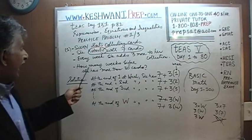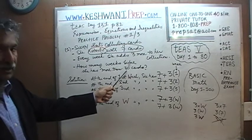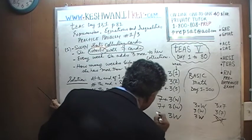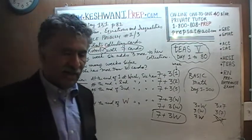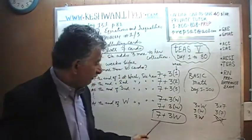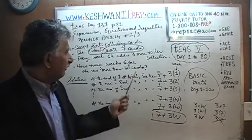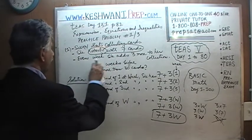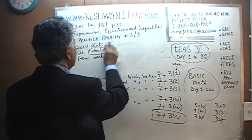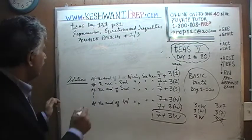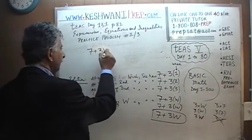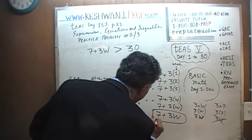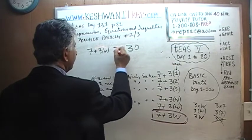The question is: how many weeks does she need to collect before she has more than 30 cards? The quantity 7 + 3W represents the number of cards she will have at the end of W weeks. We need that quantity to be more than 30. So the inequality is: 7 + 3W > 30. That's it — that's the inequality, and as far as the exam is concerned, you're done.